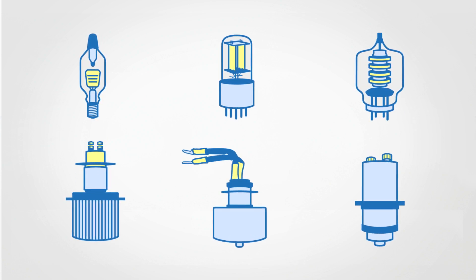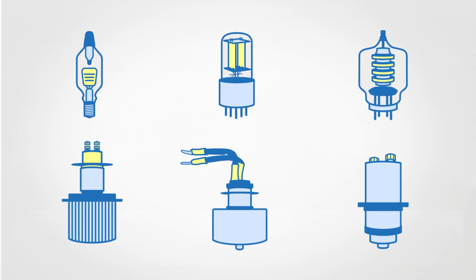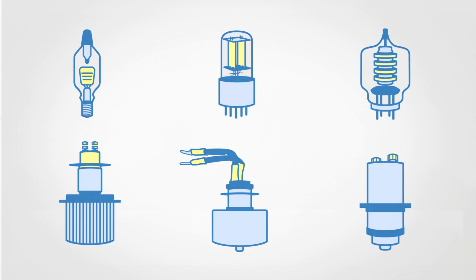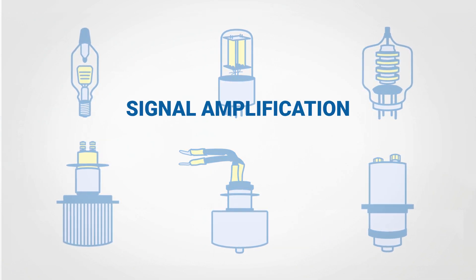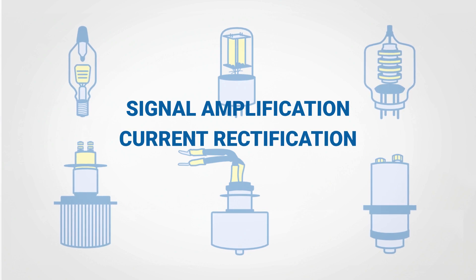There are many types of vacuum tubes depending on their use. They are essentially used for a number of fundamental electronic functions such as signal amplification and current rectification.